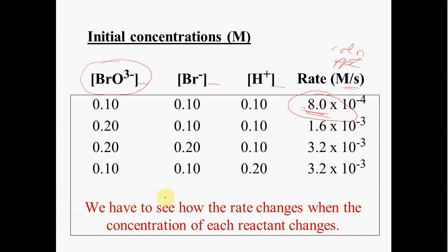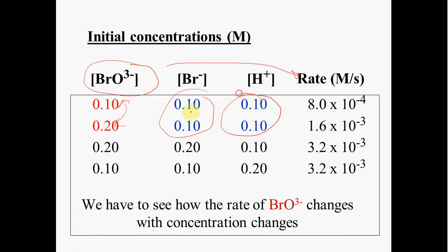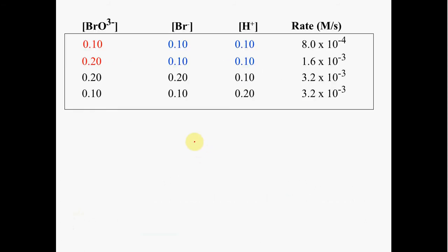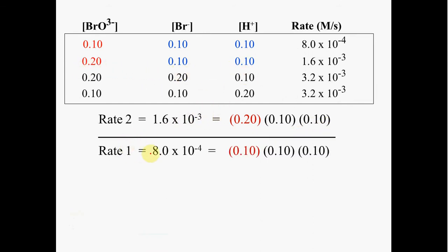To see how the bromate ion affects the rate, we pick experiments where the bromate ion concentration has changed while the other two ions remain constant. We set up the ratio of rate 2 over rate 1 — picking rate 2 over rate 1 so we get a whole number relationship rather than a fraction. We can see that the concentration has doubled.